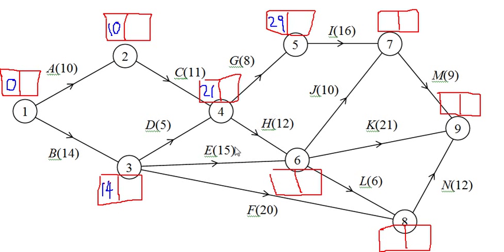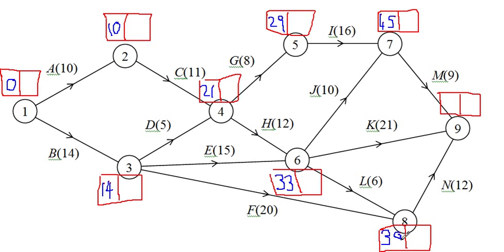For six: six depends on H and E being done. H can be done at thirty-three, E at twenty-nine, so thirty-three is the earliest time we can be at six. For seven: seven depends on I - we can finish I at forty-five and J at forty-three, so forty-five is the earliest that we can be at seven and ready to move on. For eight: F takes twenty, so thirty-four; and L takes six, so thirty-nine. Thirty-nine is the earliest that we could have finished everything leading into number eight.